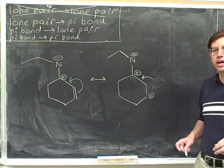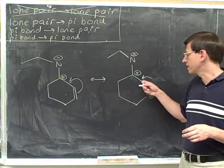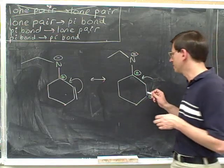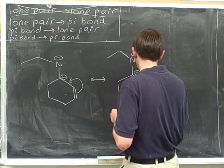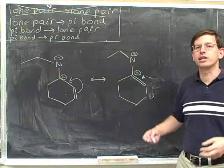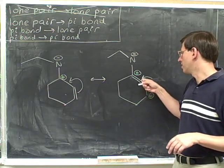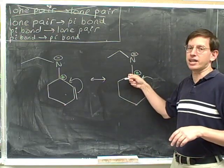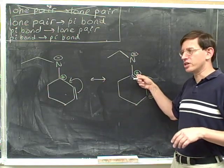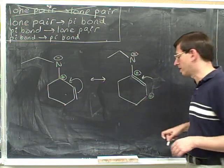Now we look at the head of the arrow and we ask: where are the electrons going to? The head of this arrow is pointing towards the middle of the sigma bond. We've learned that that means the creation of a new pi bond. At the head of each arrow, there's always exactly one atom that is becoming more negative. This is the atom that is gaining electrons — it's becoming more negative. Since it started with a positive charge, it should now be neutral.